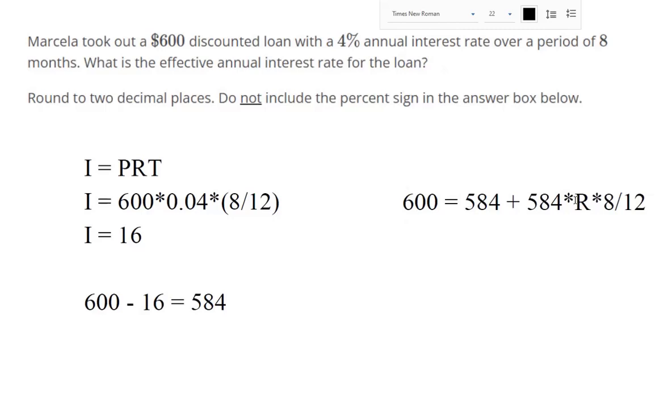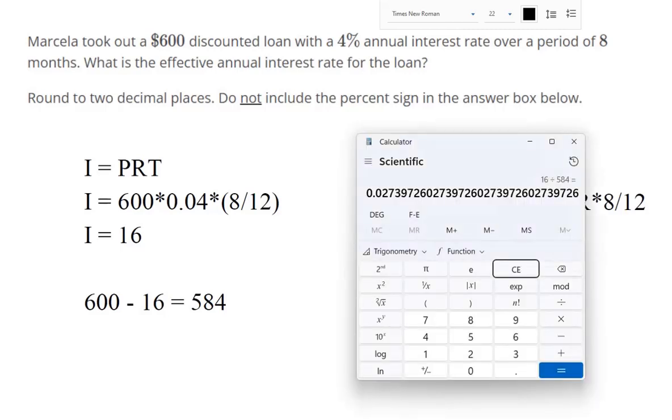So, what would it take? What interest rate would it take to get us back up to $600? So, we've got $600 equals $584 plus $584 times 8 divided by 12. That's $389.333.